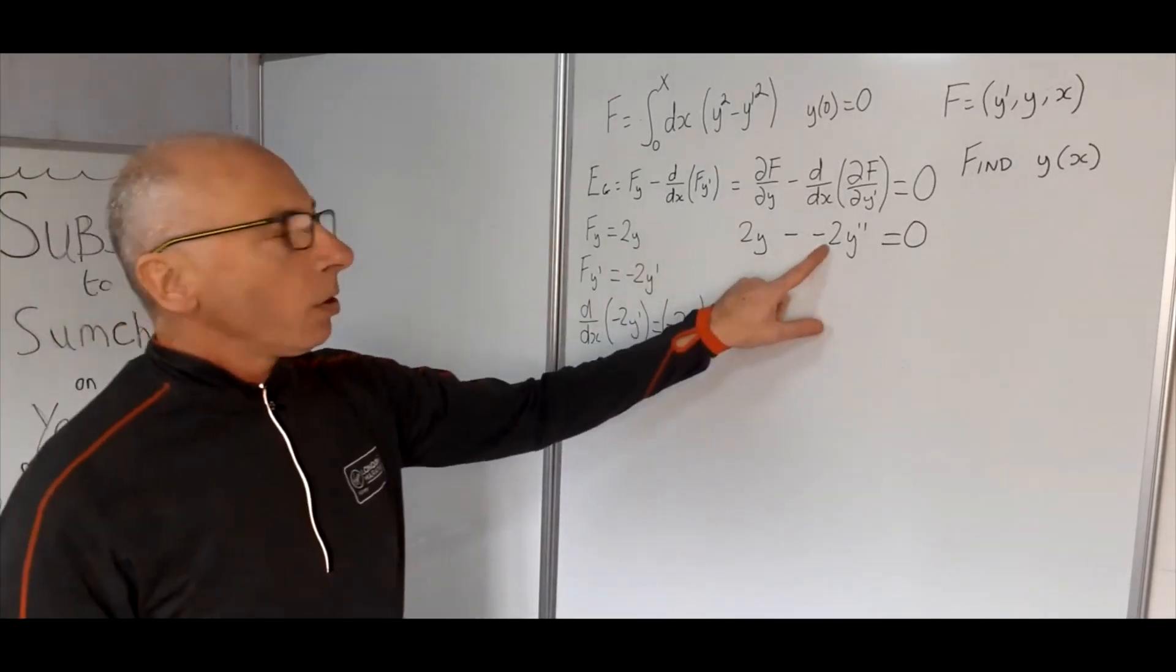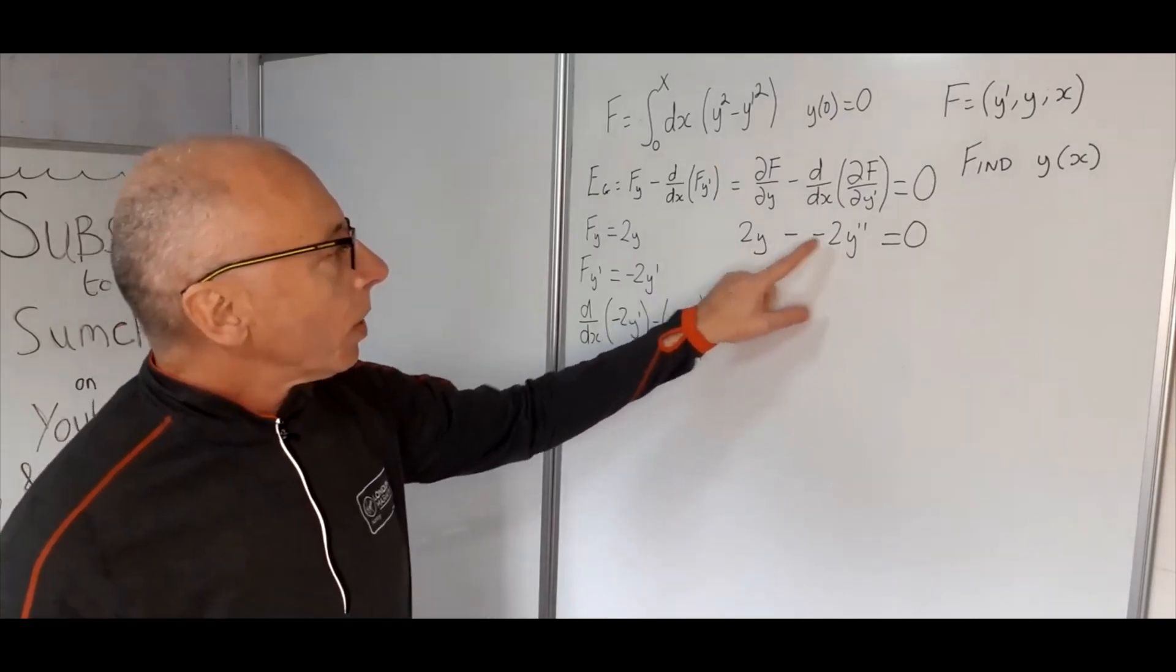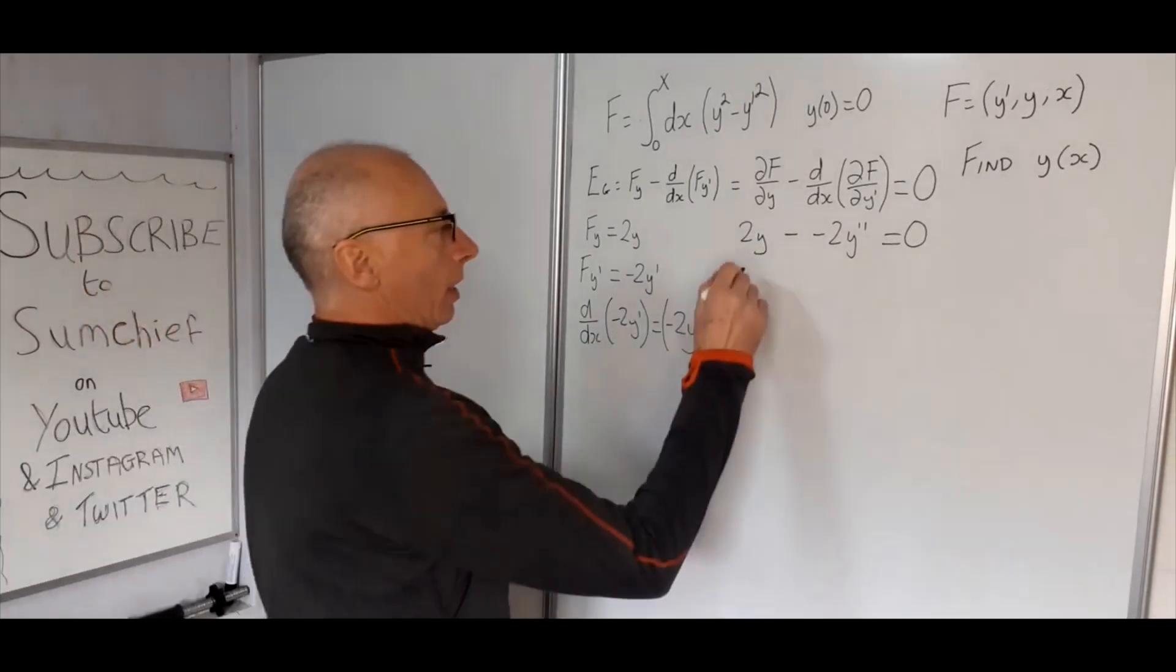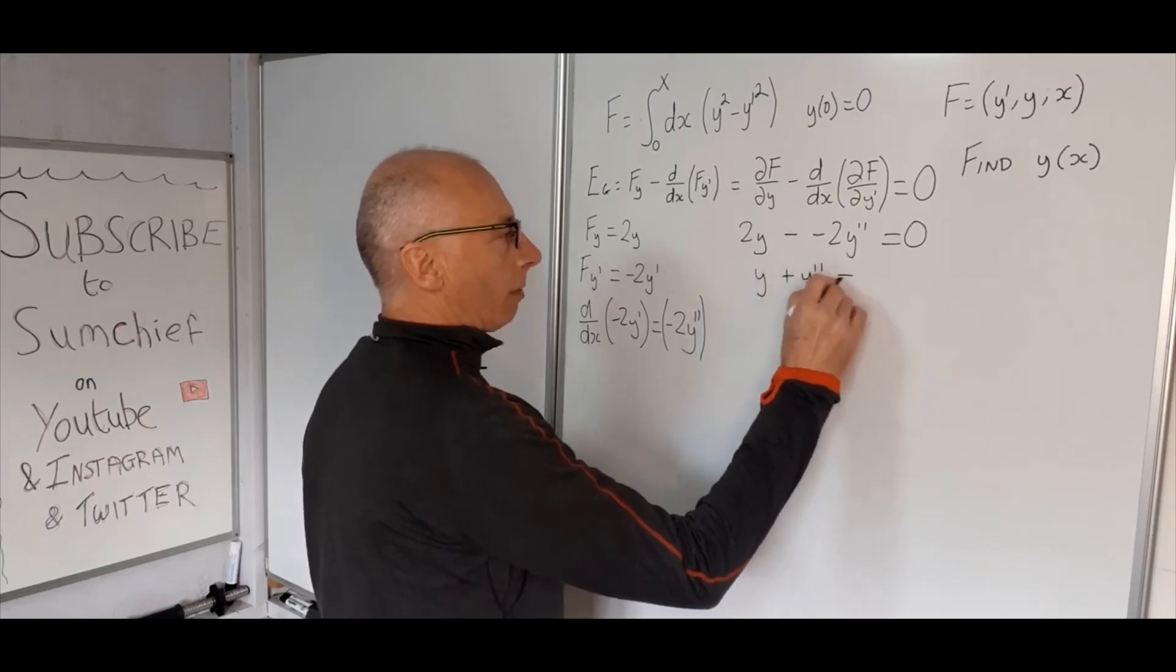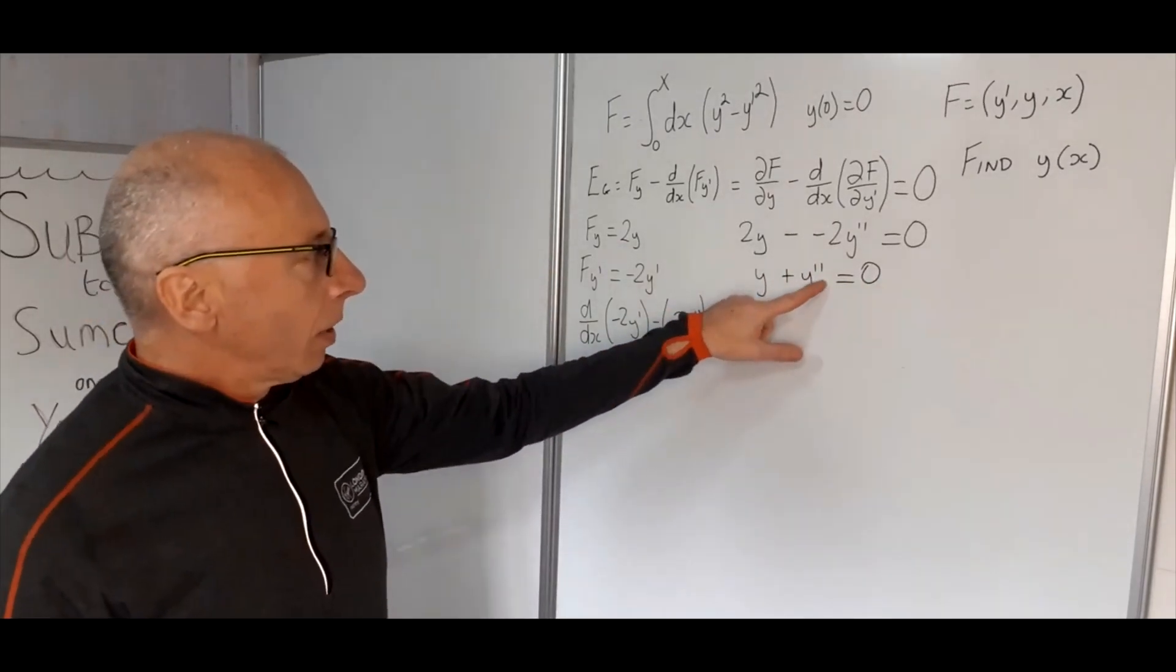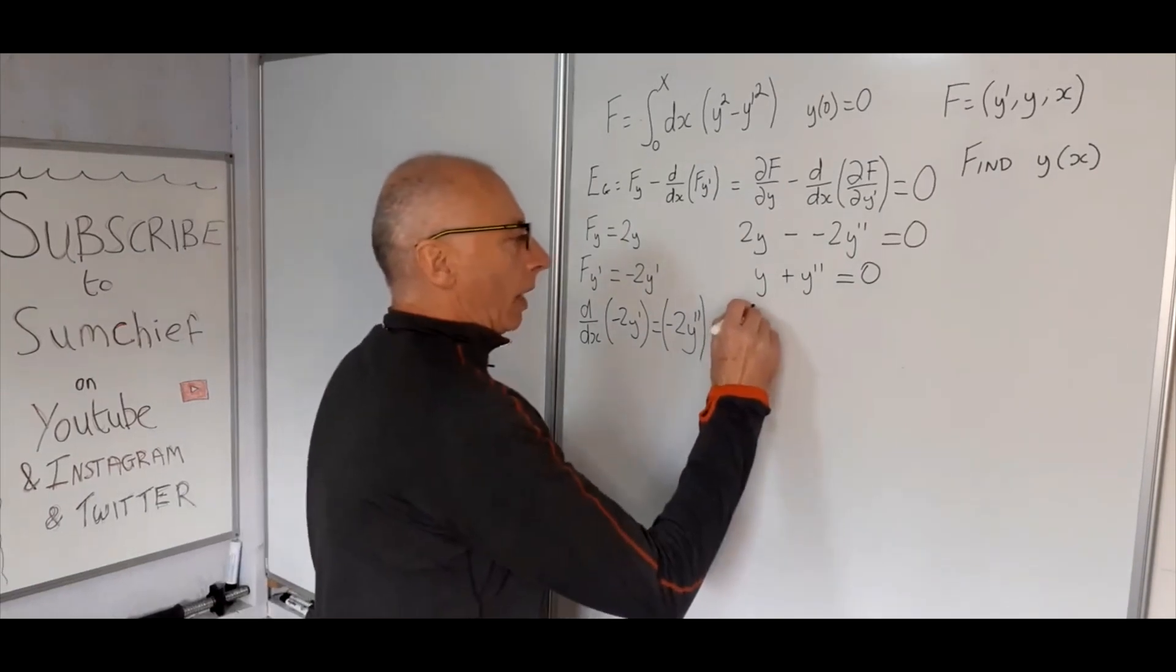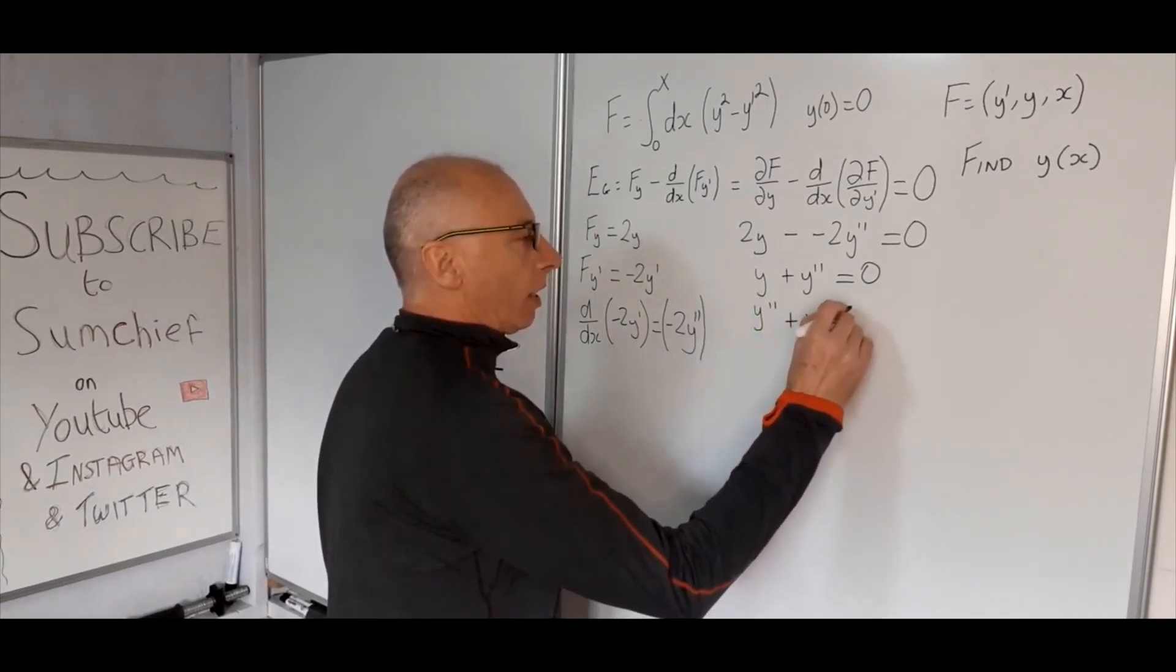Okay, so we've got two minuses—obviously makes a plus—and these constant multiples here, or coefficients, we can just divide everything by 2 and simplify it a little bit more. So then we've got y plus y double prime equals 0. Now I always find it good practice to bring this y double prime to the front, just as you do when you're doing your partial derivatives back in calculus one days. So y double prime plus y equals 0.